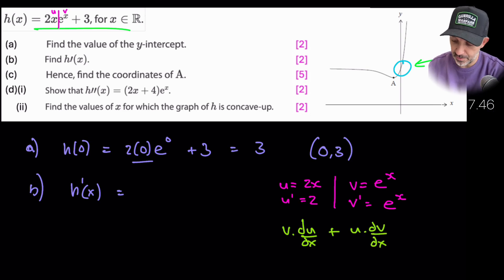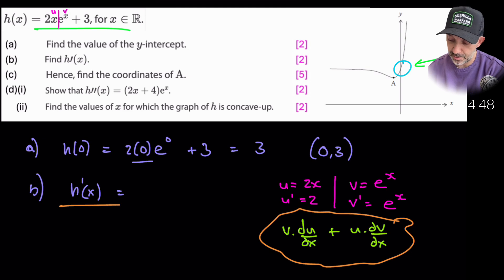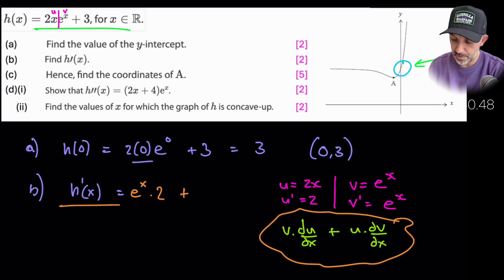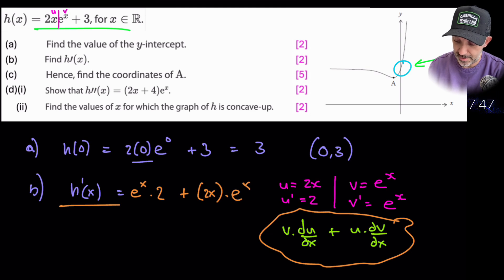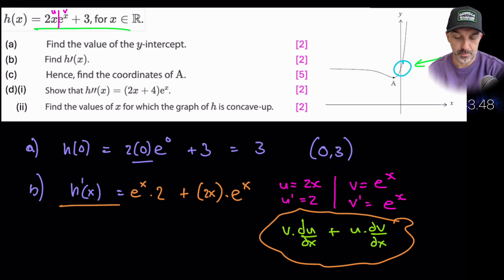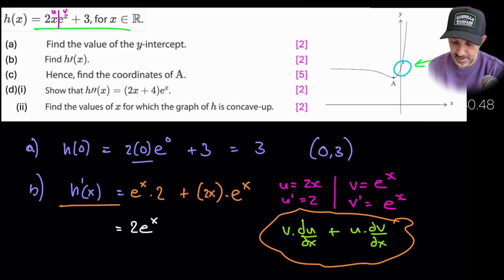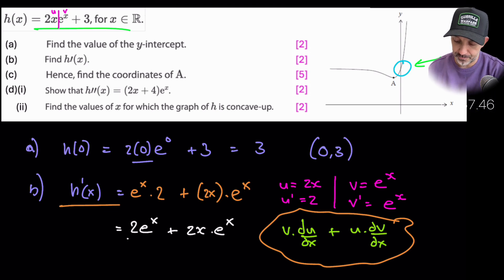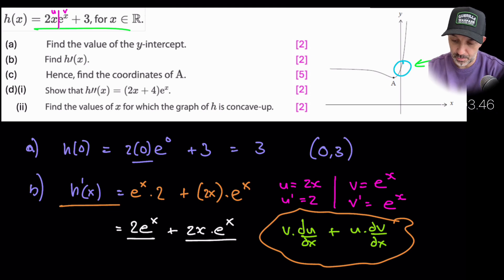Putting all of this into the product rule — v(du/dx) + u(dv/dx) — we substitute: v is eˣ, du/dx is 2, plus u which is 2x times dv/dx which is eˣ. Don't forget the derivative of the constant 3 goes to 0. This leaves us with 2eˣ + 2xeˣ. We can't combine those terms since they are not like terms.